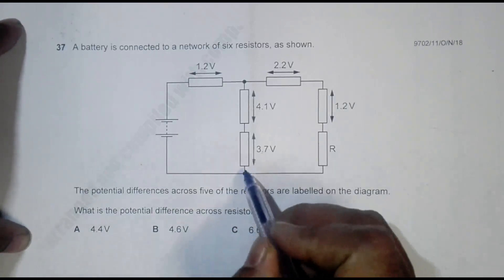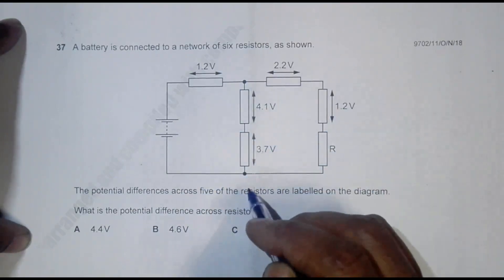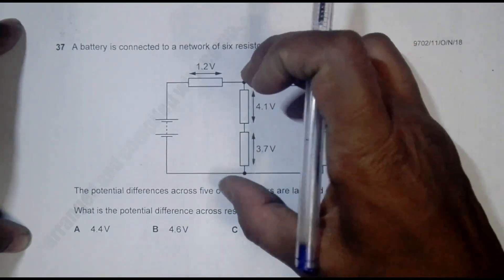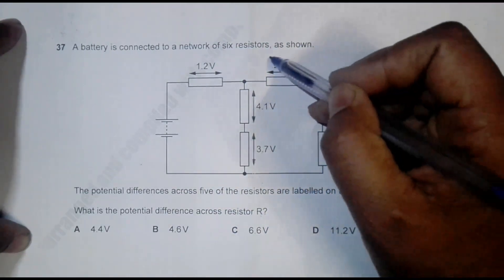This point and this point is a common point for this branch and this branch. So what I must have is that the potential difference across these three resistors should be the same.